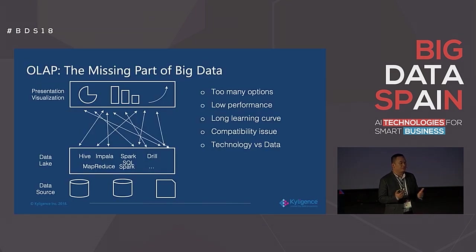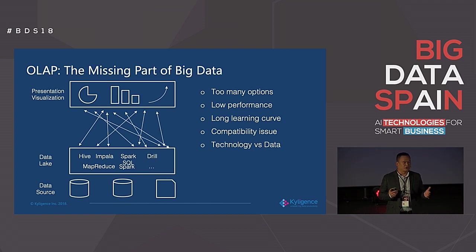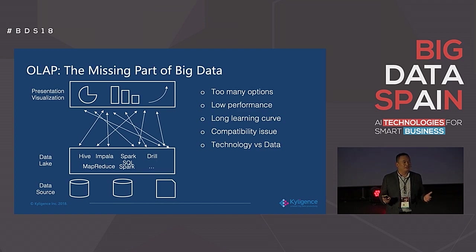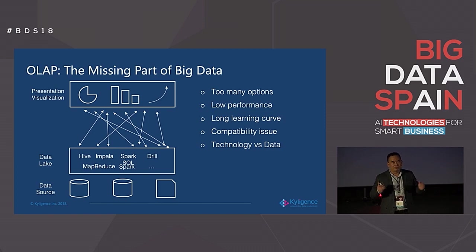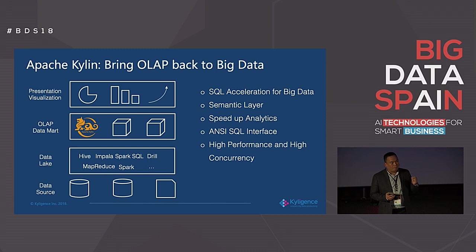Let me talk about the problem we want to resolve. When we move from a traditional EDW to big data and the data lake, something is missing. There are too many different technologies — Hive, Impala, Spark SQL, and so on — and you have to learn each of them. The query layer only has a SQL interface, but something is still missing. So we decided to bring the OLAP concept back to the big data ecosystem. OLAP is an older term, about 30 years old, but it's very good for building cubes on top of traditional data warehouses like Teradata or DB2. But when you move to the Hadoop world, there was nothing at that moment.